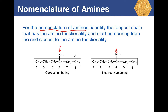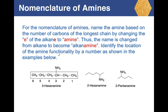For example, starting at the end closest to the amine gives positions 1 through 6. Starting from the other end would place the amine at position 4 — which is incorrect, as it is further away. The correct numbering gives six carbons, so the root name is hexane. We change the terminal 'e' to 'amine,' giving 'hexanamine.' Since the amine is on carbon 3, the full name is 3-hexanamine.